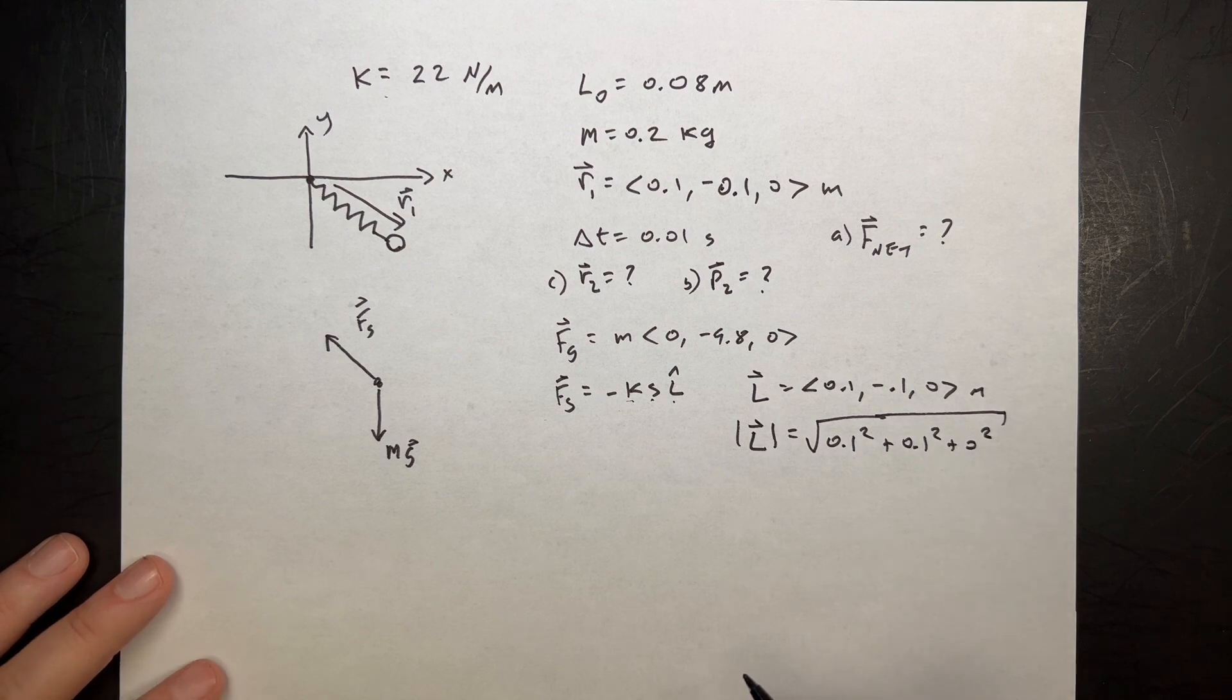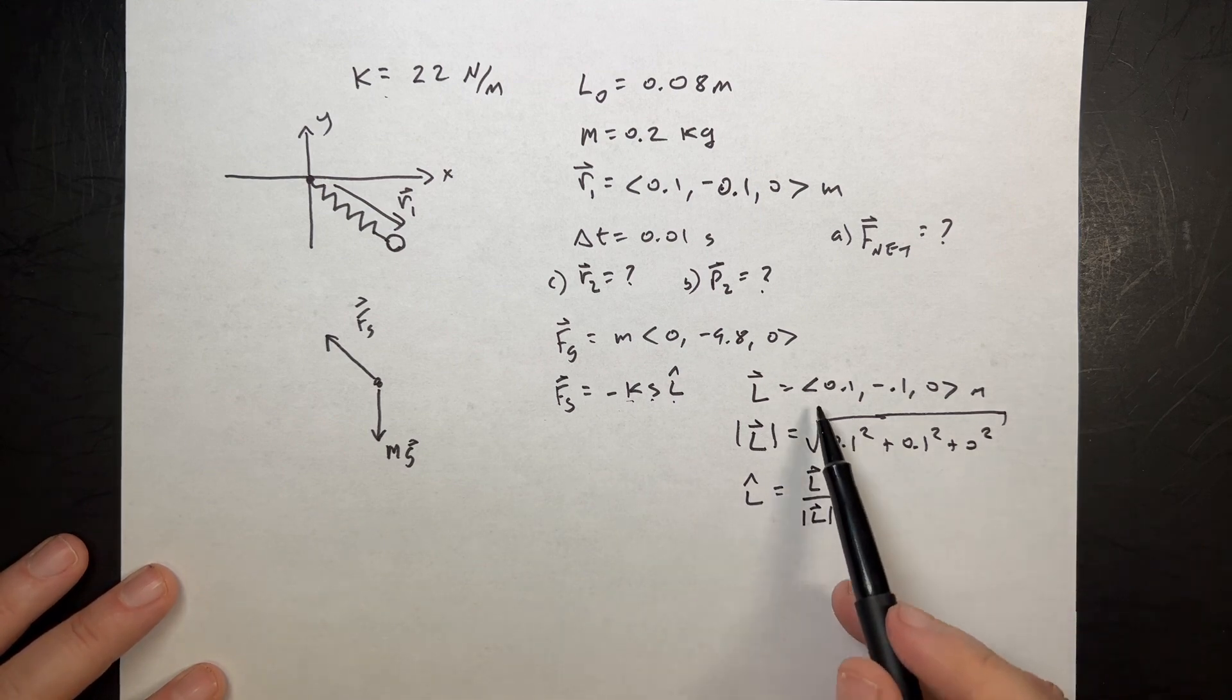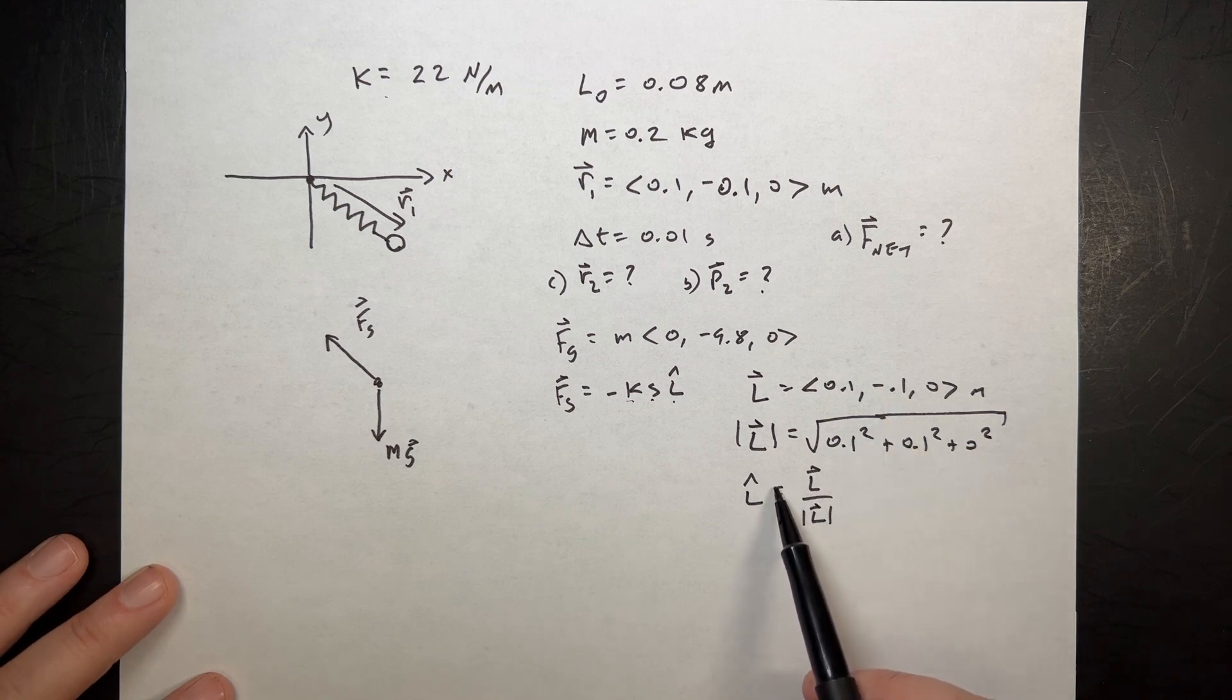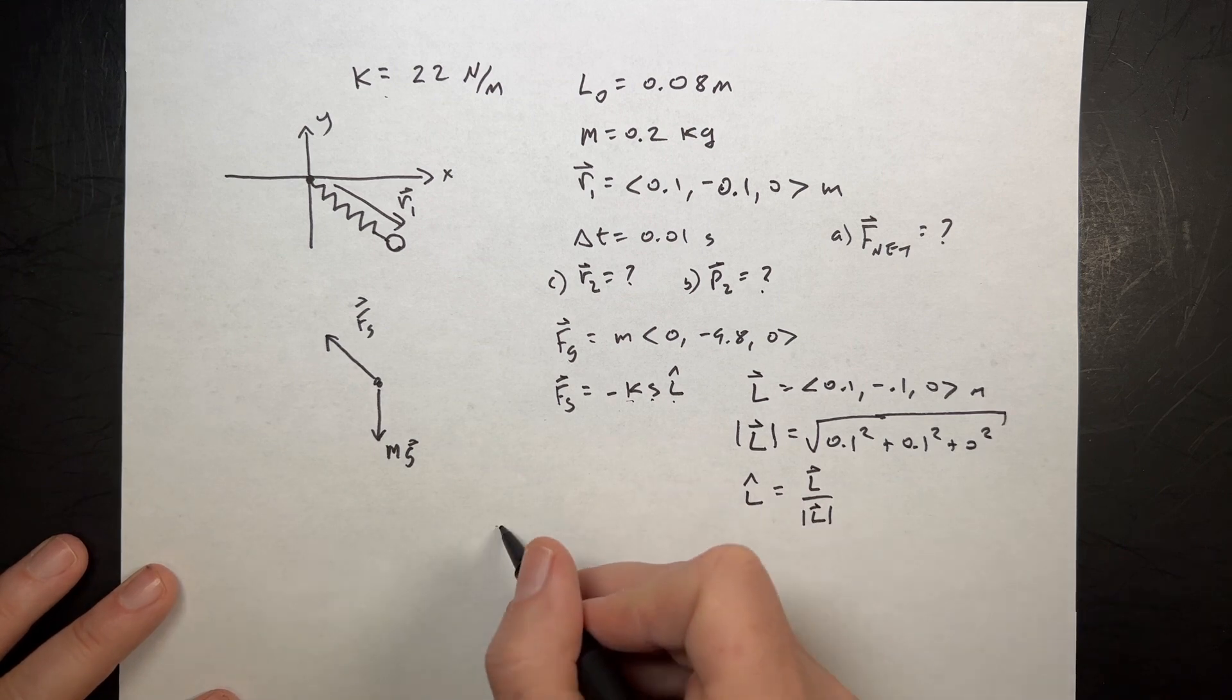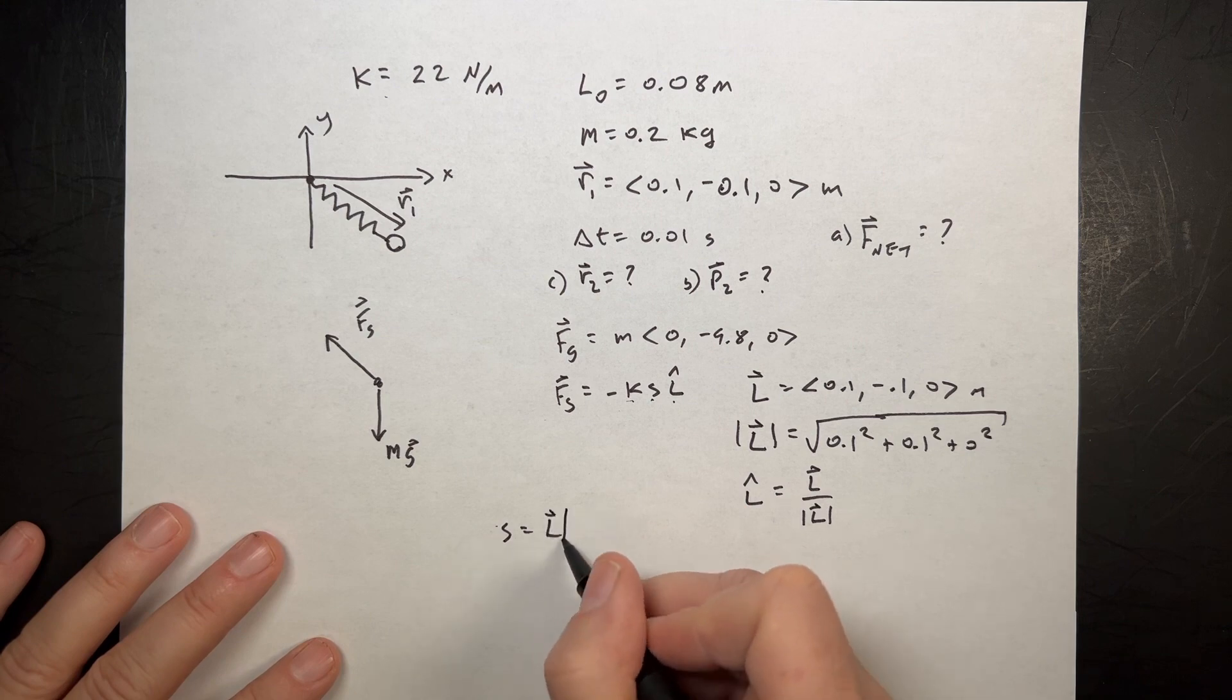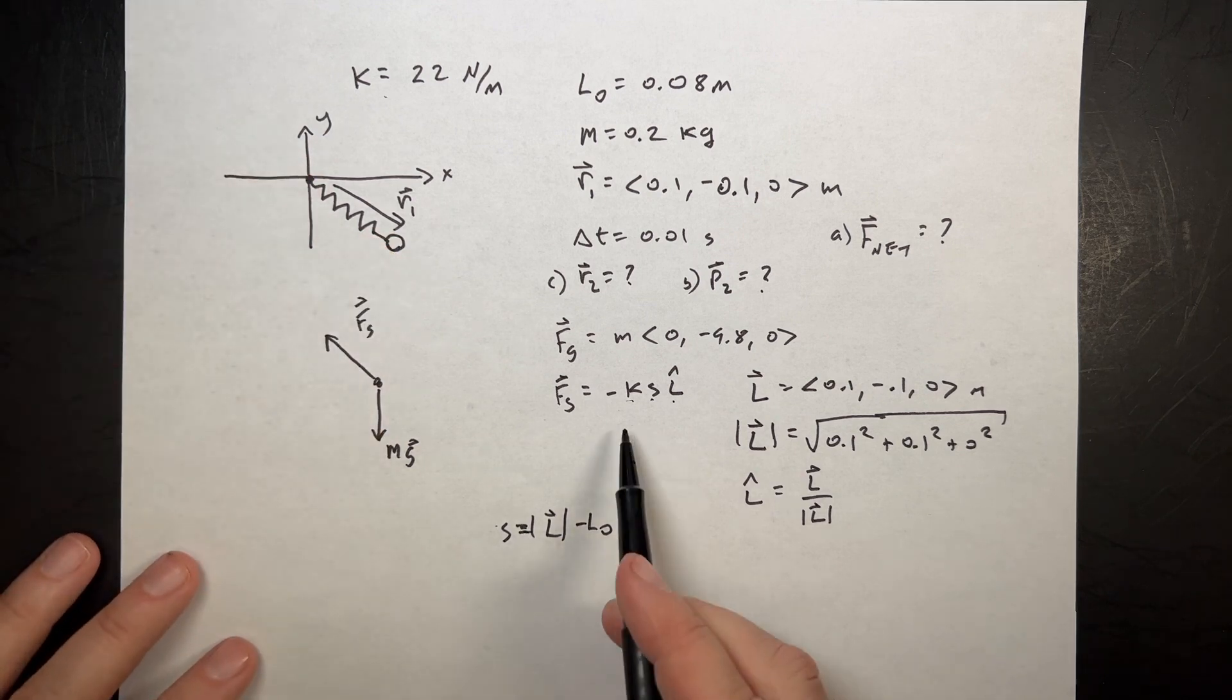L magnitude is going to be the square root of 0.1 squared plus 0.1 squared plus 0 squared. I'm going to do this all in Python in just a second. And then I can find L hat, the unit vector. It's going to be the vector L divided by the magnitude of the vector L. So I'm going to take 0.1 divided by that number, negative 0.1 divided by that number, and that's L hat. Now what about S? S is going to be equal to the length of this vector, L magnitude, minus the unstretched length.